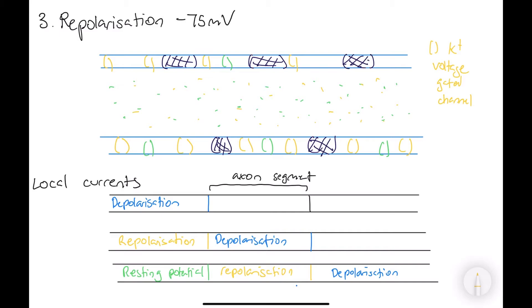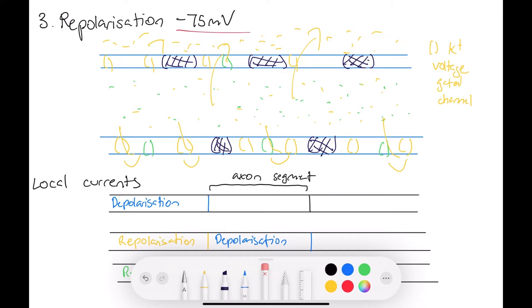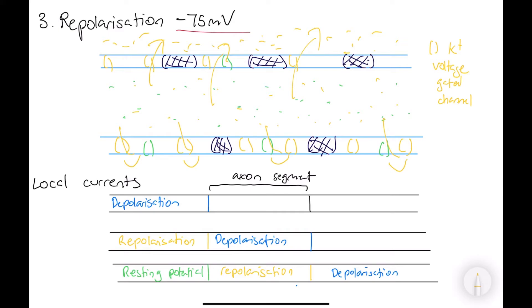Okay, after depolarization, we get to the next stage of a nerve impulse, which is repolarization, which is at negative 75 millivolts. And what happens here is that the positive voltage we were at earlier, as it gets more and more positive, the sodium voltage gated channels will start to close, but more of the potassium voltage gated channels will open. So, this means that potassium ions will diffuse out. They will diffuse out, and then there will be a lot more potassium ions on the outside than on the inside. And this means that it goes back to the negative voltage, as there will be more positive ions on the outside.